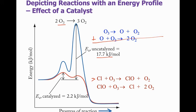Overall, again, the same result. Two ozones become three oxygens. So we see that we have drastically reduced the activation energy for this reaction. So instead of 17.7, the catalyzed version is only 2.2 kilojoules per mole. So it makes it a lot easier for ozone to become oxygen if it's catalyzed.